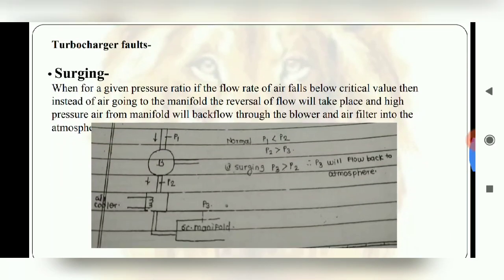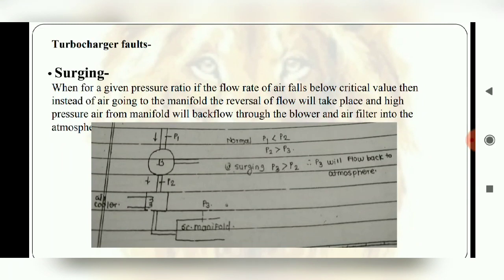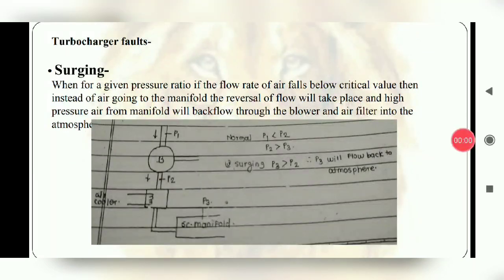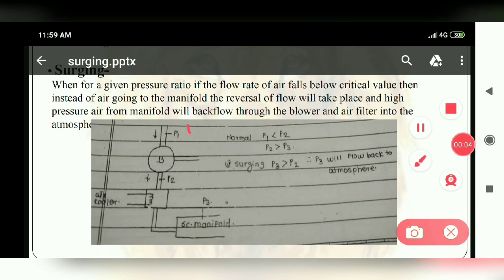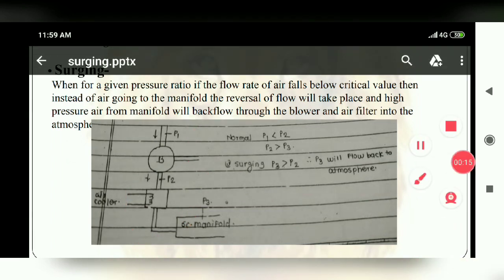Then we will come to the turbocharger faults. So one of the most famous faults is surging. We will see the basic diagram. The pressure is P1, this is P2, when the scavenged manifold is going to be P3 pressure.